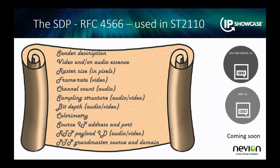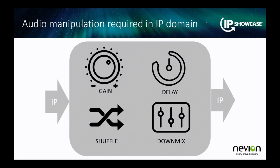Thinking about the way we do audio — one thing we've seen a massive amount of requirement for is all the stuff we've been used to doing in audio production: changing the gain, doing compensating delay, shuffling channels, doing down-mix work, etc. But what we need to do now is do that in the IP domain. This is another flexibility of having all our signals routed and manipulated in the IP domain. So rather than having to plug AES3 signals through or even analogue flows, we can actually have these as a service. In many of the deployments I've been involved in, we have a whole bank of audio processing which we can route in and out of to do different functions.